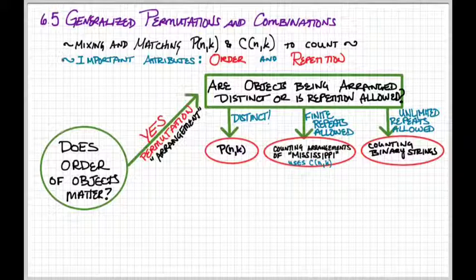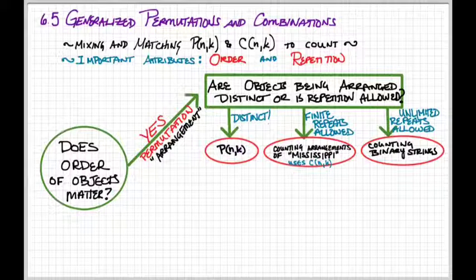And then, the final possibility is you are allowed unlimited repetitions. This might be counting binary strings, because you never run out of zeros and ones for your digits.